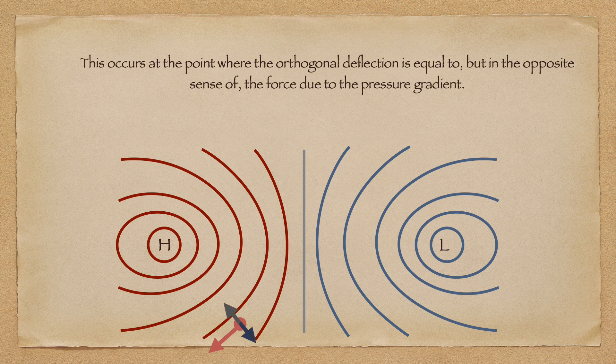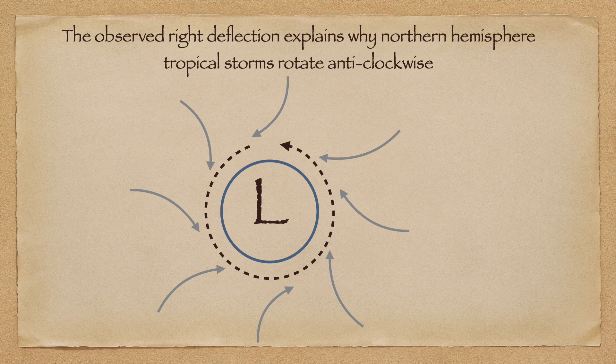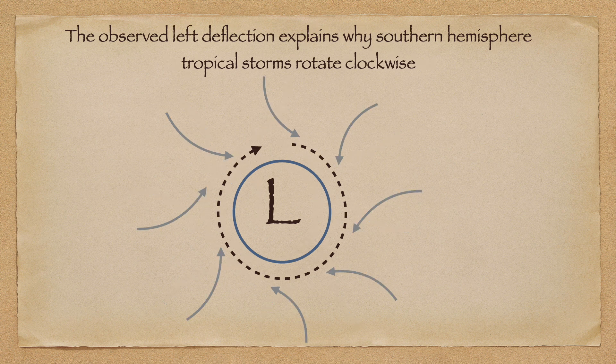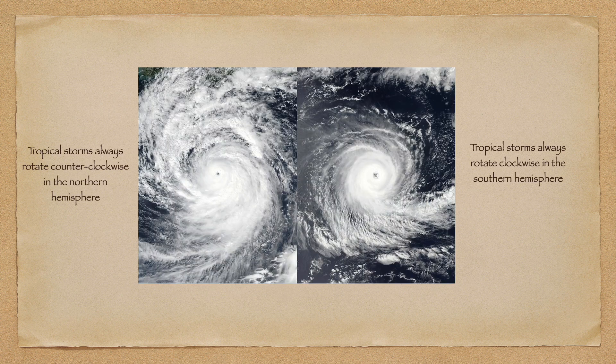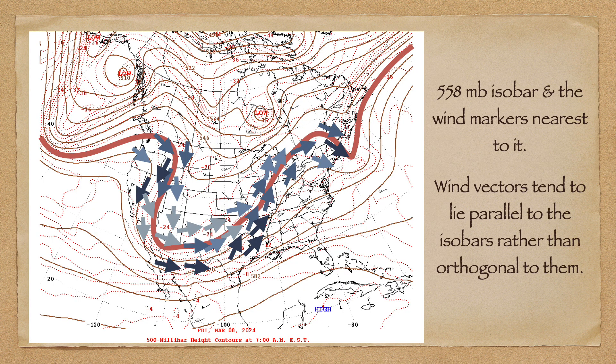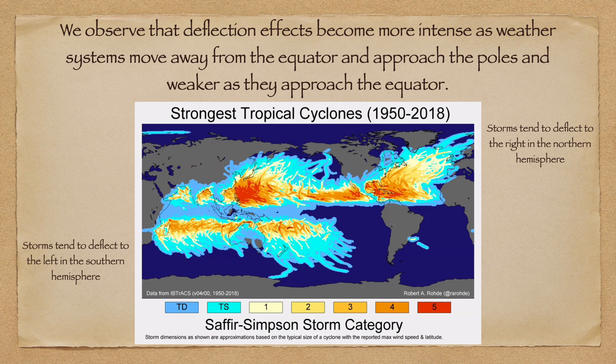This process continues until eventually the air packet's motion is entirely parallel to the isobar. This occurs when the normal force due to the pressure gradient is equal to the deflection in the opposite sense. At this point, the forces perpendicular to the isobar cancel one another out, and only the motion parallel to the isobar remains. It is this persistent rightward deflection that results in tropical storms in the Northern Hemisphere rotating counterclockwise, while the persistent left-hand deflection in the Southern Hemisphere makes tropical storms rotate clockwise. These effects are clearly illustrated in high-altitude photographs of tropical storm systems, and the same trends are immediately obvious in everyday weather patterns.